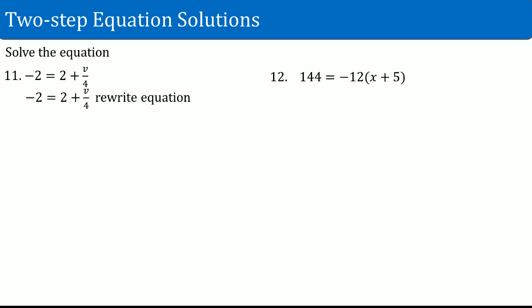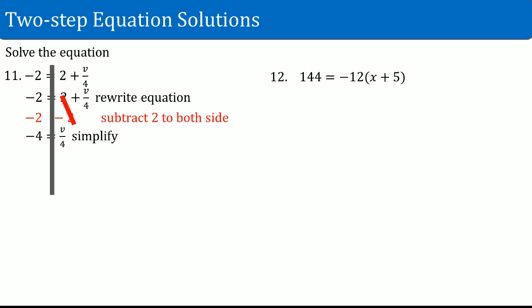Number eleven: negative 2 equals 2 plus v over 4. Rewrite the equation and draw the line straight down. On the variable side: a plus 2 and a divide by 4. Deal with the 2 first — it is the outermost thing — so subtract 2 from both sides. That cancels. Negative 2 minus 2 becomes negative 4. The v divide by 4 comes straight down. Now multiply by 4 on both sides. Four over 4 on the right-hand side cancels out. On the left-hand side, 4 times negative 4 becomes negative 16. So v equals negative 16.